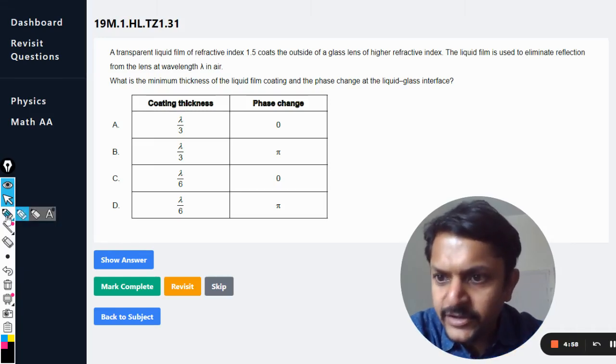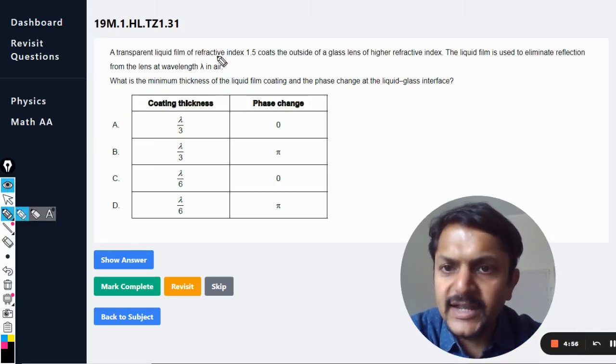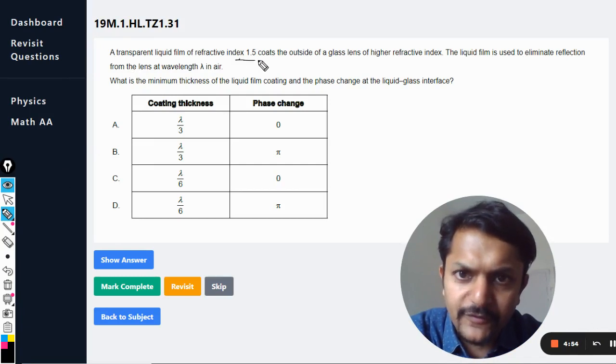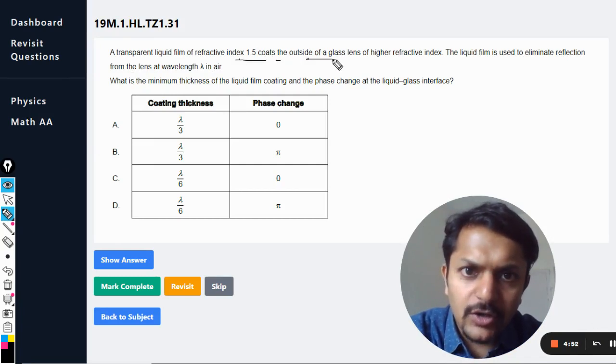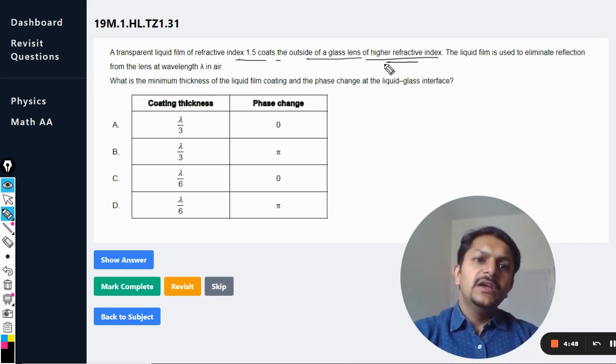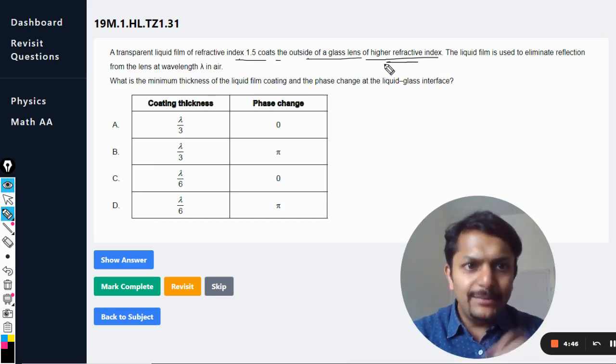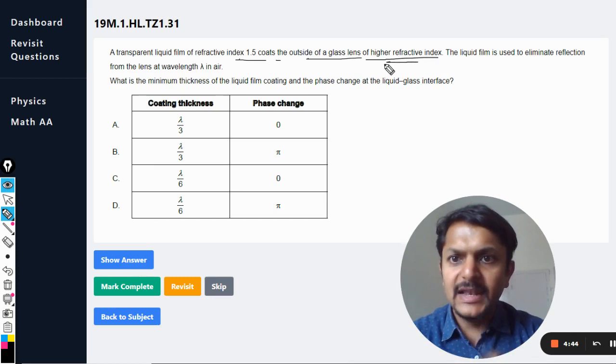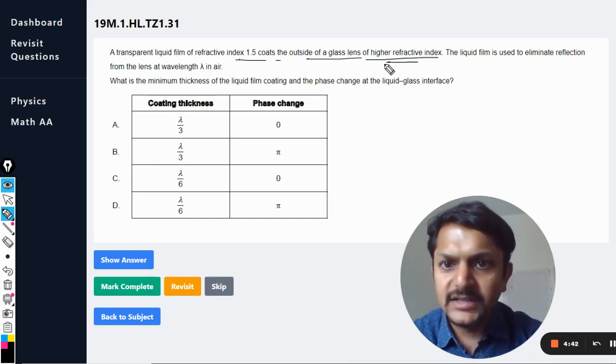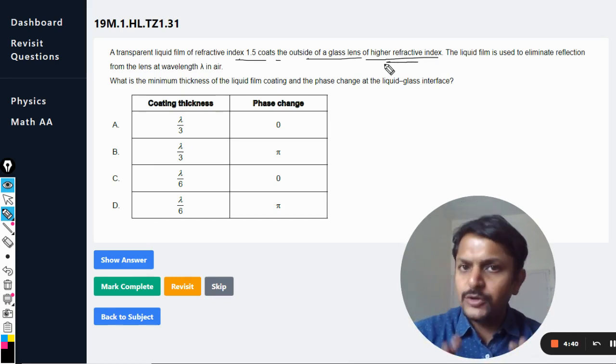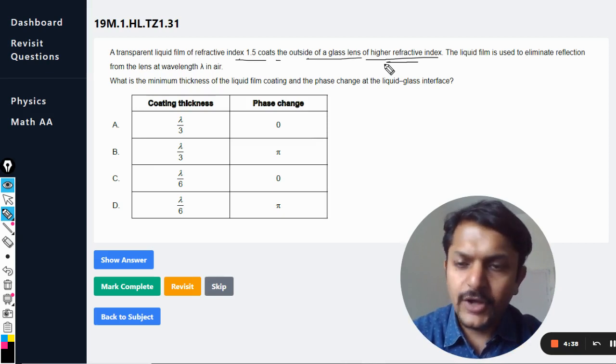Okay dear students, let us see what is there in this question. A transparent liquid film of refractive index 1.5 coats the outside of a glass lens of higher refractive index. The liquid film is used to eliminate the reflection from the lens at the wavelength lambda in the air. So for a particular wavelength, this phenomena will take place.